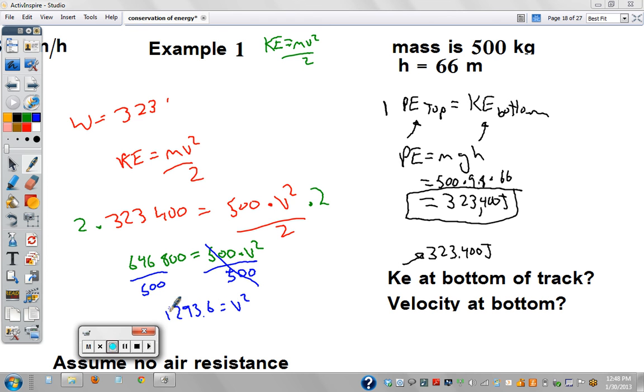And we end up with 1,293.6 equals v squared. And the final step is to just solve for v. Square root undoes this. So velocity equals 35.9 meters per second. Remember, we're solving for velocity, so make sure you have the correct units.